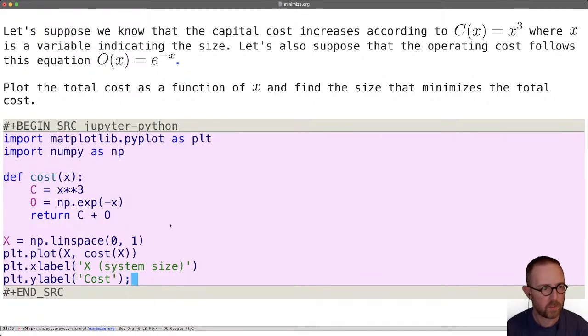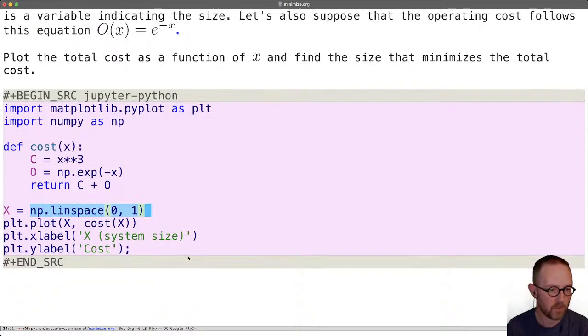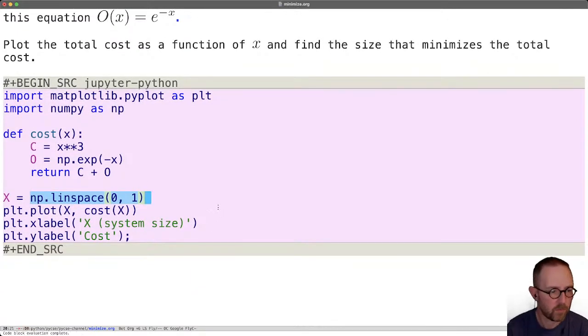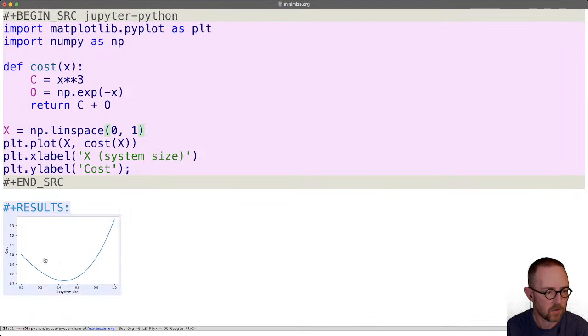All right, so we've just defined a function we call cost. We use two variables here for the capital cost, operating cost. We return the sum, make an array of 50 points from zero to one, we'll make a plot. And when we run this we should get after it runs for a second a curve that looks like this.